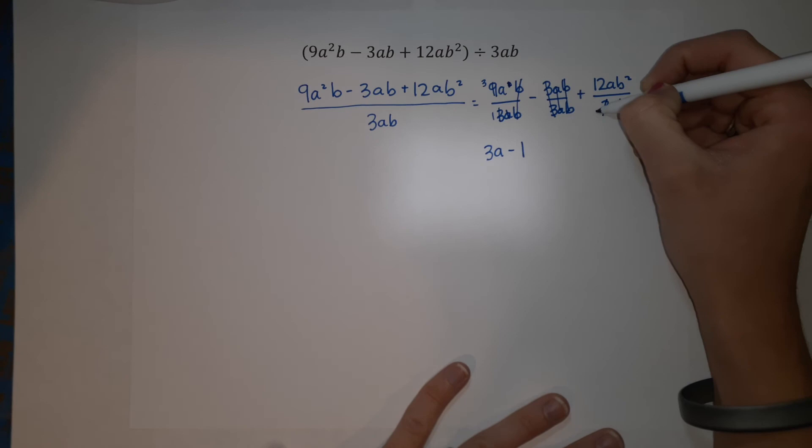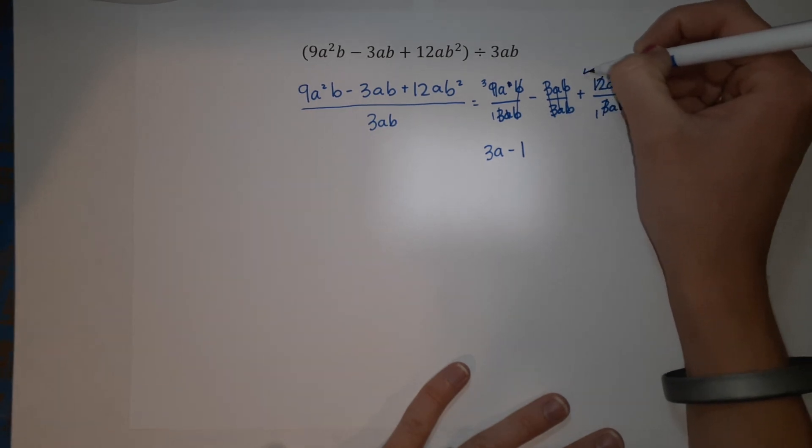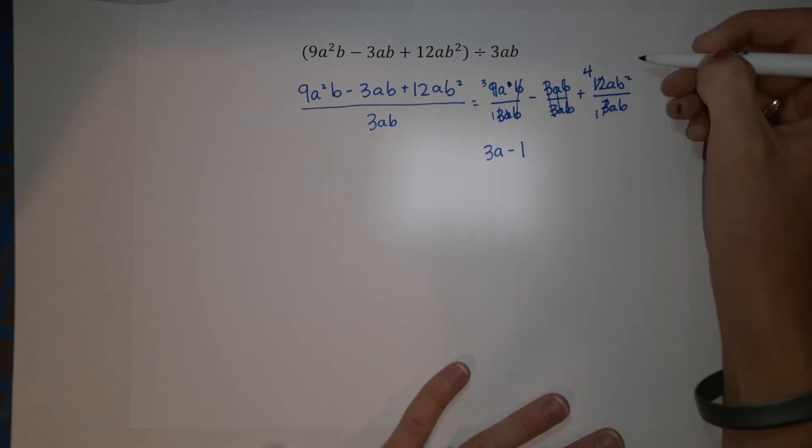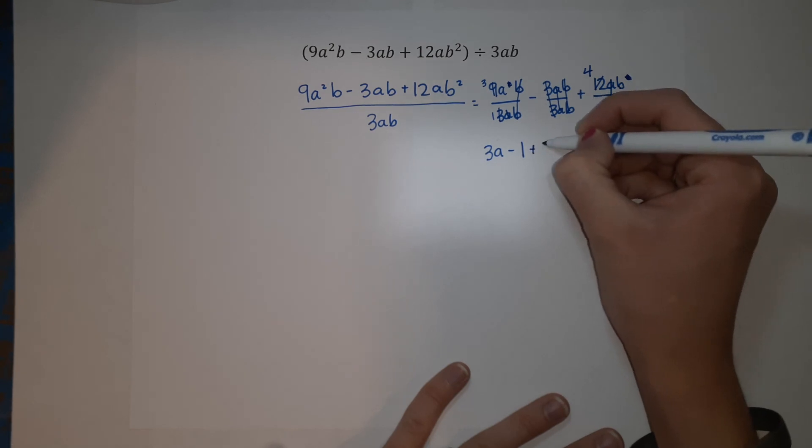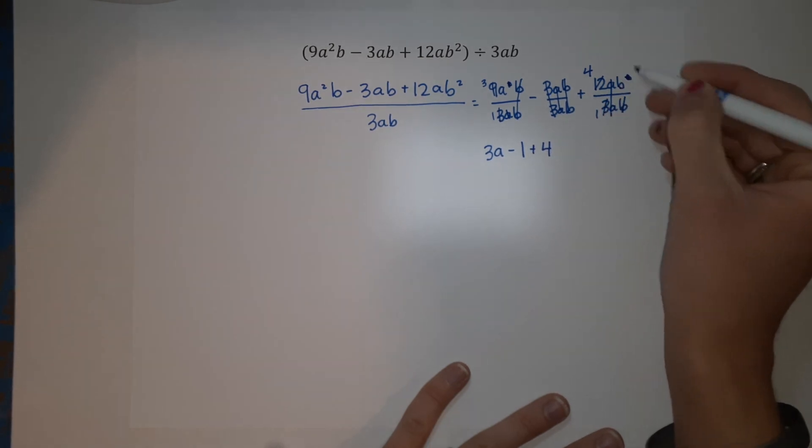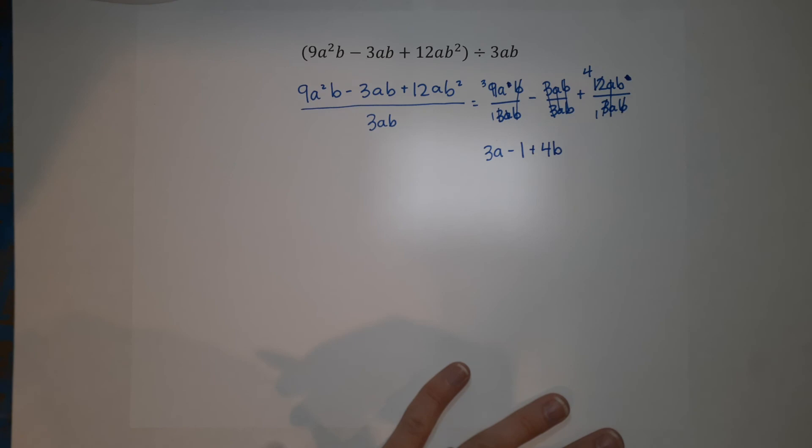Last one, 3 goes into 3 once, 3 goes into 12 four times. Those As cancel, and one of these Bs will cancel with 1 on the bottom. So I'm left with 4. My As canceled, I'm left with 1B. Look at that. That's your answer.